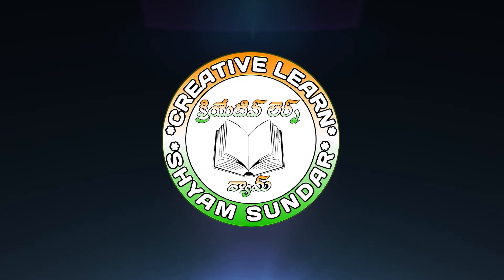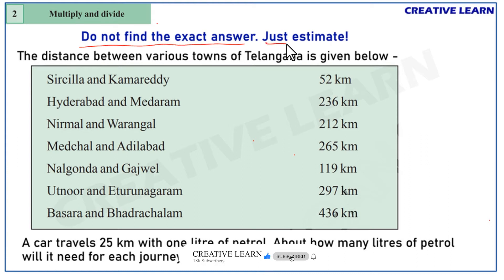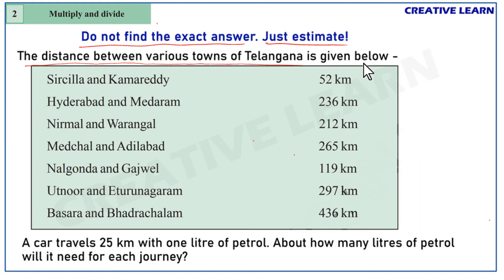Hello everyone, welcome to Creative One channel. Here we are going to continue our exercise from the second chapter — multiply and divide. Look here: do not find the exact answer, just estimate. No need of finding exact answer; we have to write the approximate answers. The question gives the distance between various towns of Telangana.